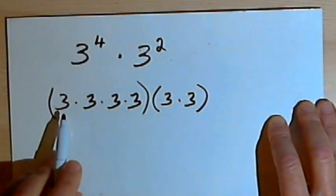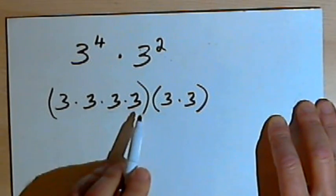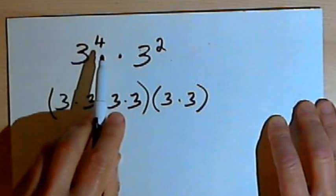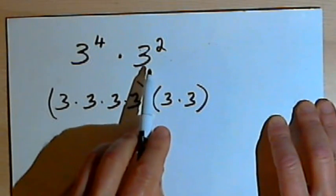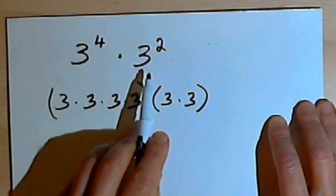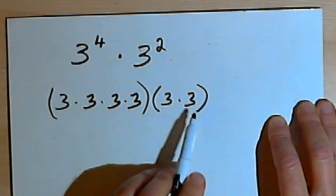So what I've got here is the repeated multiplication from the 3 to the fourth, in other words, 3 four times, times the repeated multiplication from the 3 squared, or 3 two more times.